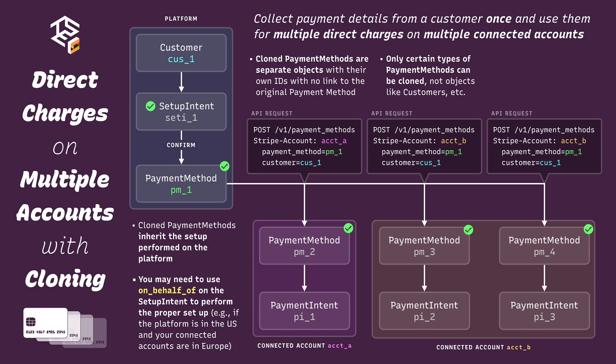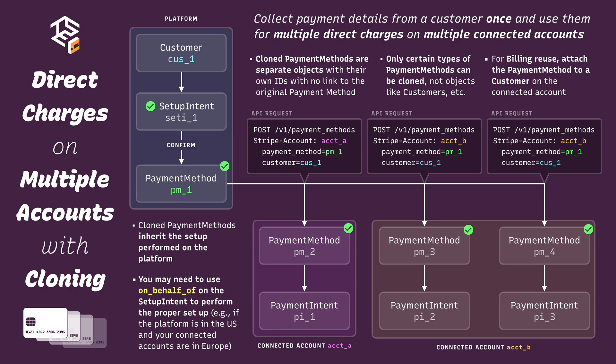If you want to copy an object like a customer to a connected account, you need to do so manually. Third, if you want to use a cloned payment method for recurring billing, such as with a subscription, you must attach it to a customer on the connected account so it can be reused.